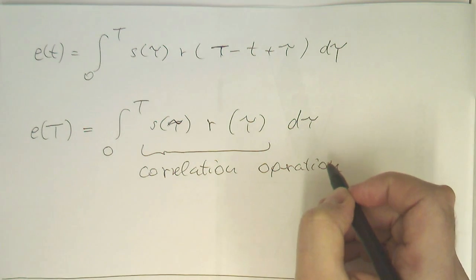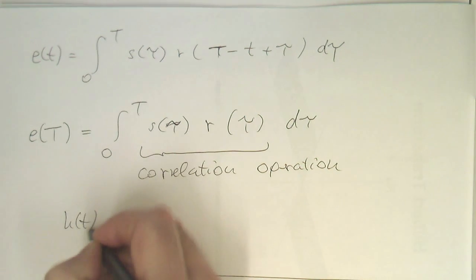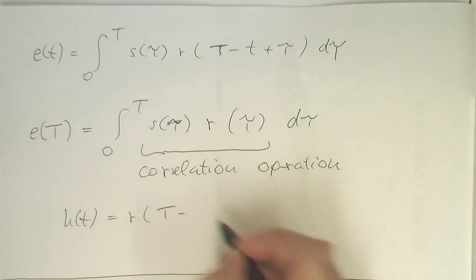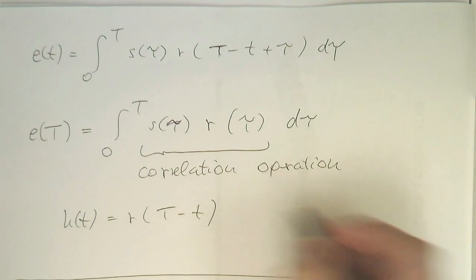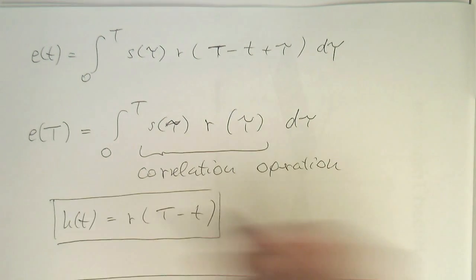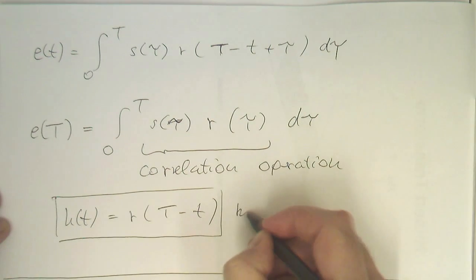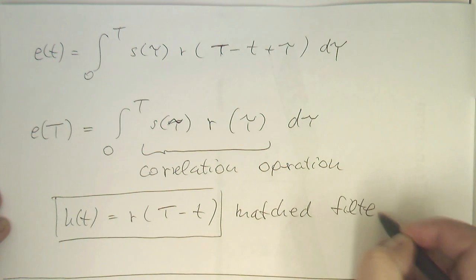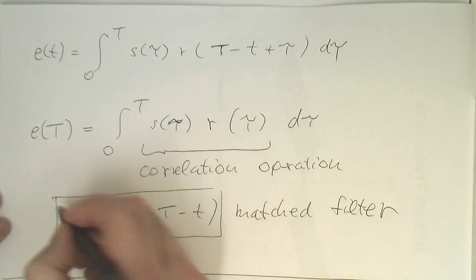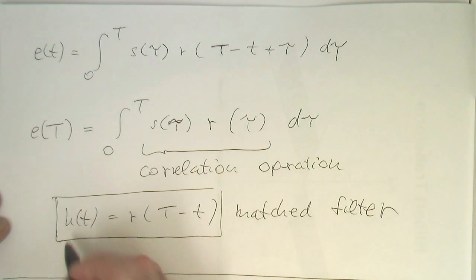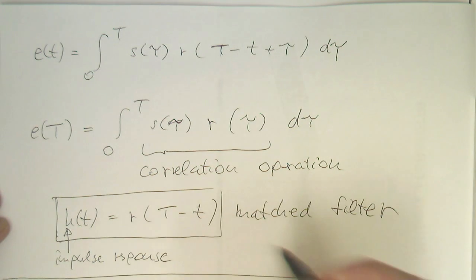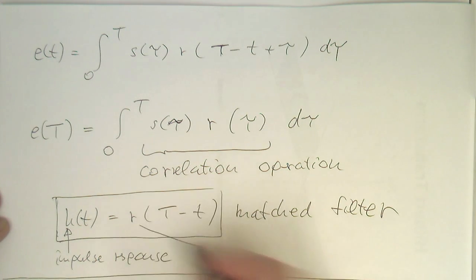And so the definition of this H of T, this was our impulse response, and this is R of T minus small t. This is called matched filter. This means the impulse response, that's our impulse response, it's just a time reversed template.